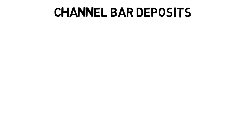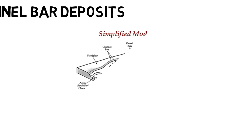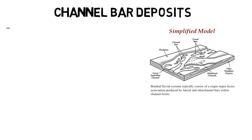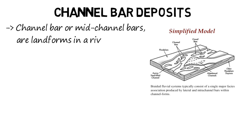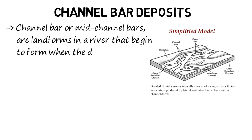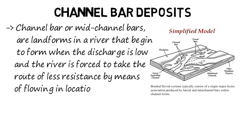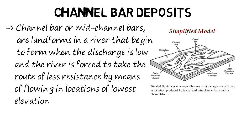Channel bar deposits. Channel bars or mid-channel bars are landforms in a river that begin to form when the discharge is low and the river is forced to take the route of least resistance by flowing in locations of lowest elevation. They are commonly composed of sand or gravel and typically occur in braided rivers.